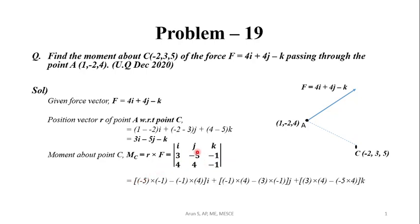Expanding the determinant: i[(-5)(-1) - (-1)(4)] - j[(3)(-1) - (-1)(4)] + k[(3)(4) - (-5)(4)]. Simplifying these terms, we get 9i - j + 32k.